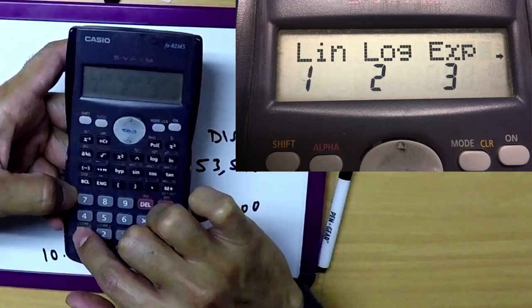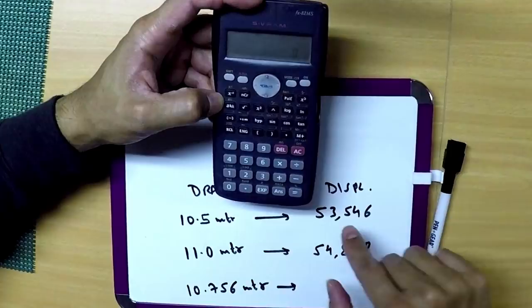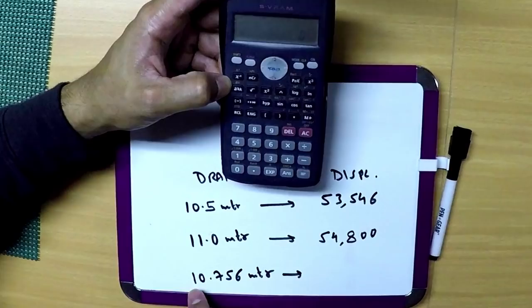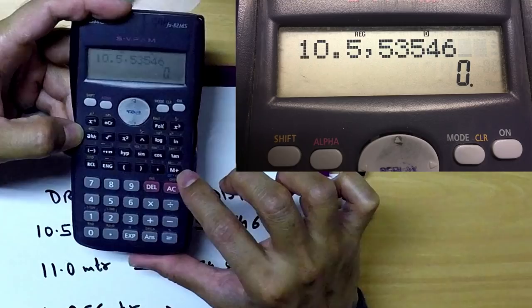Our question was 10.5 meters corresponds to 53,546, and 11 meters corresponds to 54,800. So how much will be for 10.756? What you have to do is fill in 10.5, this button is for comma, comma, 5-3-5-4-6, and save it in memory. So press this button memory plus. Now N equals 1, that means it's saved.